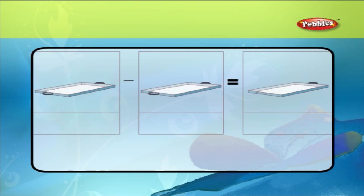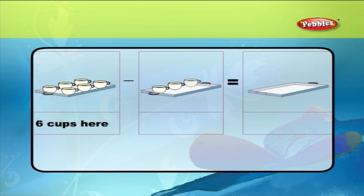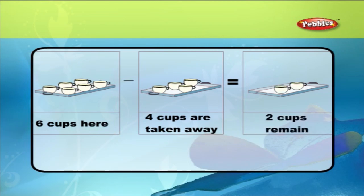In the same way, there are six cups on a tray. When four cups are taken away from the tray, we have only two cups remaining. We write this as six minus four is equal to two.